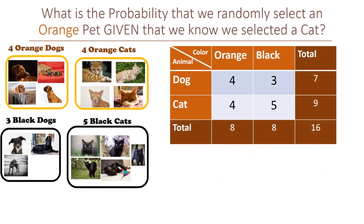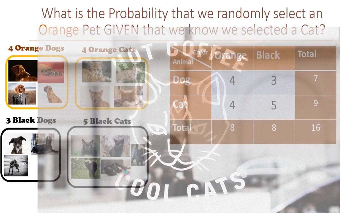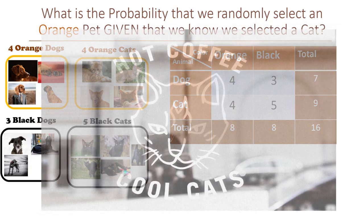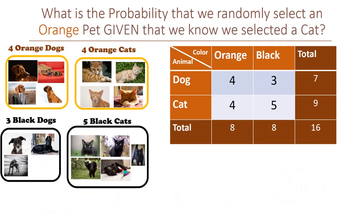Next, what is the probability that we randomly select an orange pet given that we know that we have selected a cat? So maybe all the cats are sitting together in the same room. Ooh, like maybe a cat cafe. Okay, so they're all together and somebody goes and randomly selects one. What is the probability that it is orange?